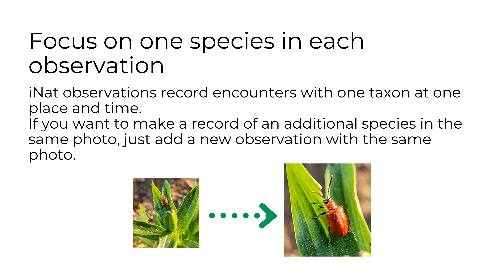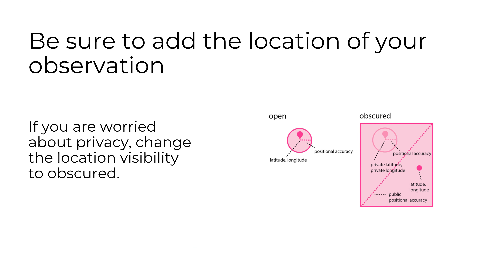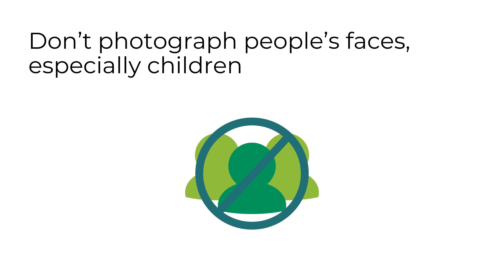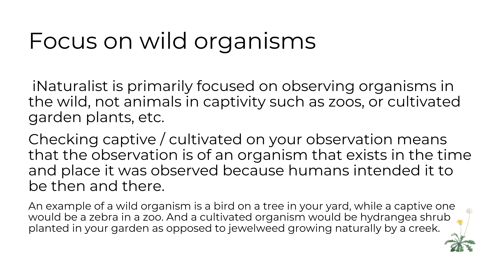Focus on one species in each observation. iNaturalist observations record encounters with one taxon at one place and time. If you want to make a record of an additional species in the same photo, just add a new observation with the same photo. Be sure to add the location of your observation. If you are worried about privacy, change the location visibility to obscured. Don't photograph people's faces, especially children. Focus on wild organisms — iNaturalist is primarily focused on observing organisms in the wild, not animals in captivity such as zoos or cultivated garden plants. Checking captive or cultivated on your observation means the organism exists in that time and place because humans intended it to be there.